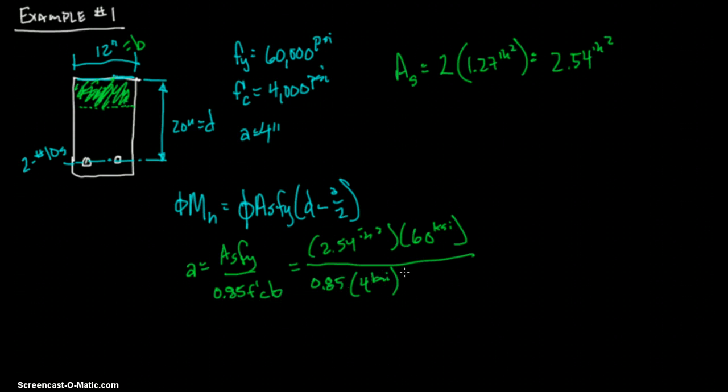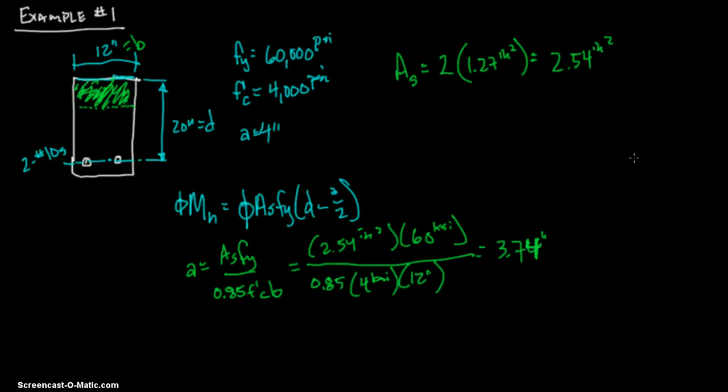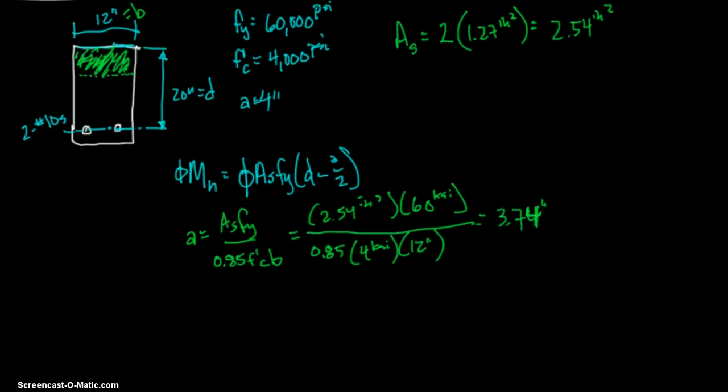And then b, b is 12 inches. So let's go ahead and see what actual a is. 2.54 times 60 divided by 0.85 divided by 4 divided by 12 equals 3.74 inches. Which they said use 4. Okay, we're fine with that.